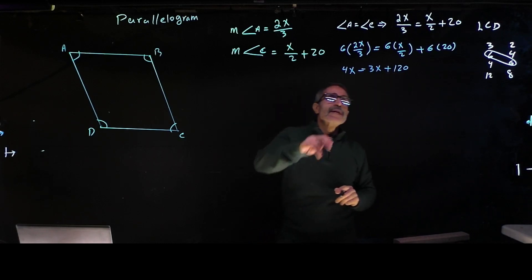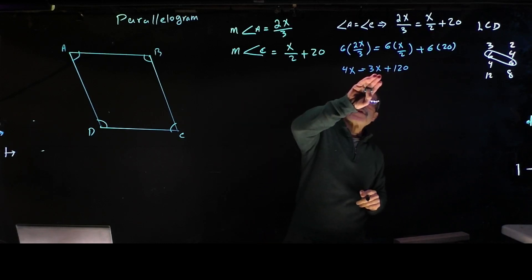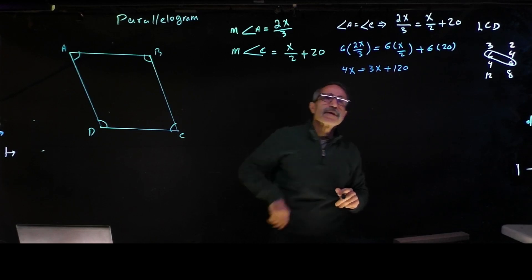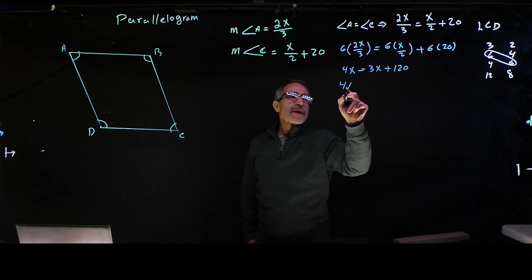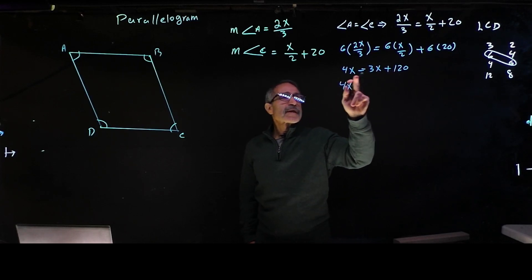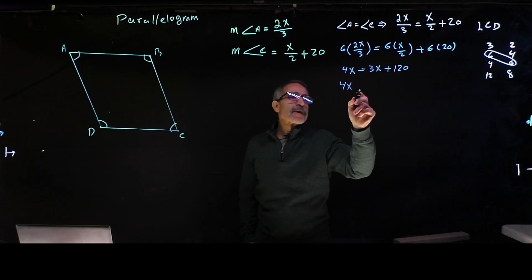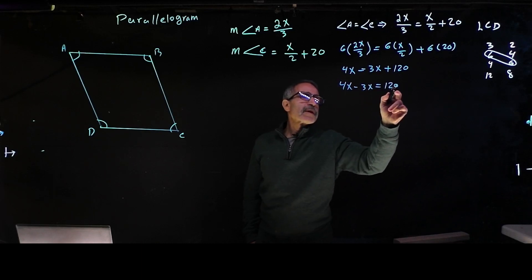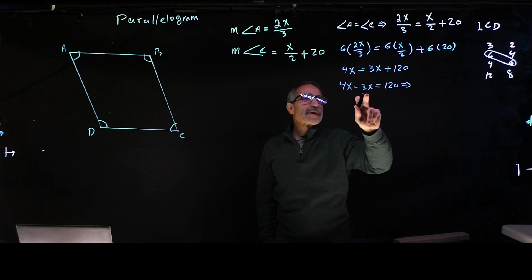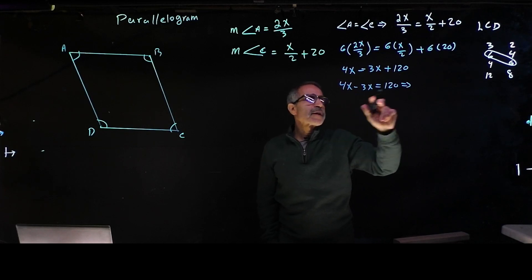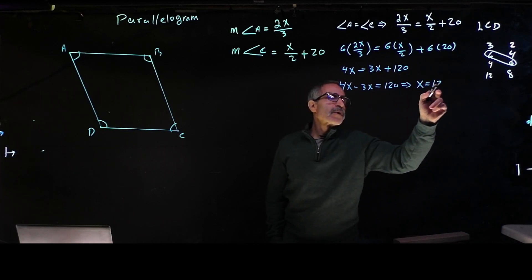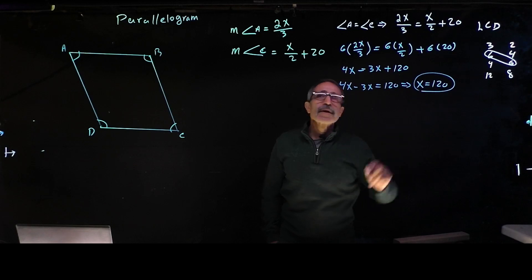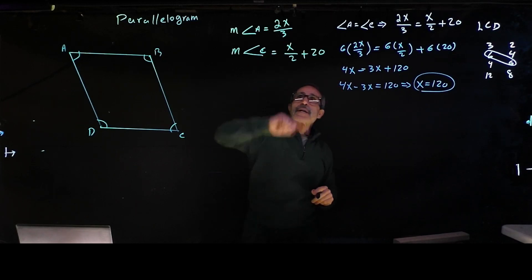To solve this equation, we move the 3x to the left side — it becomes negative. So 4x minus 3x equals 120, and therefore 1x equals 120. So x equals 120. There's our solution.